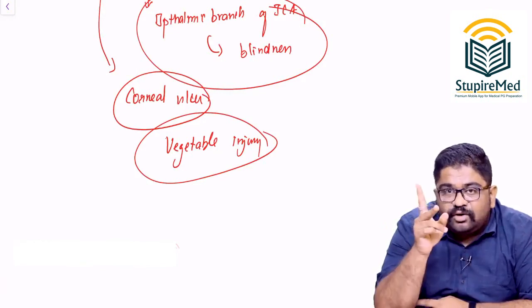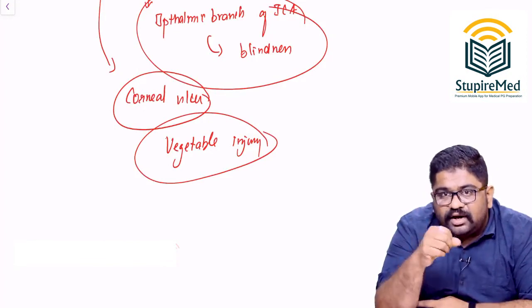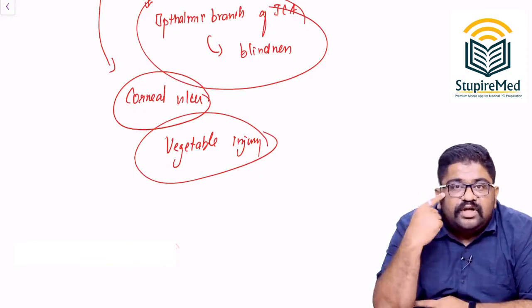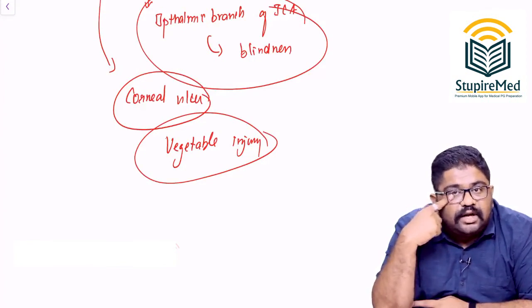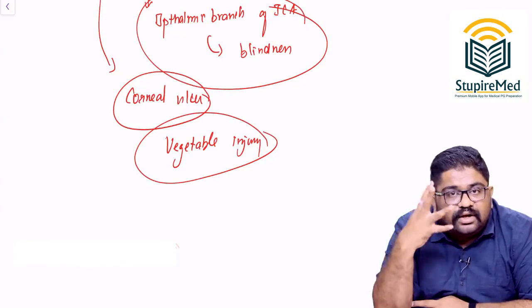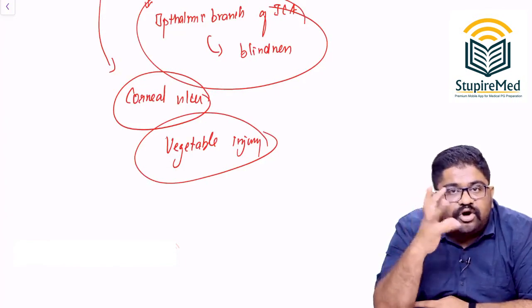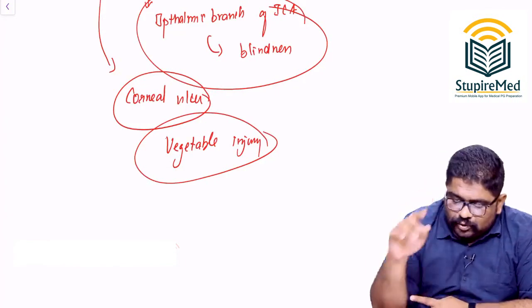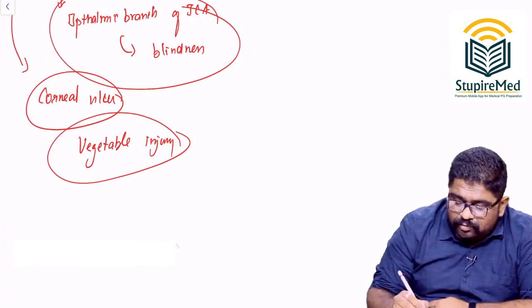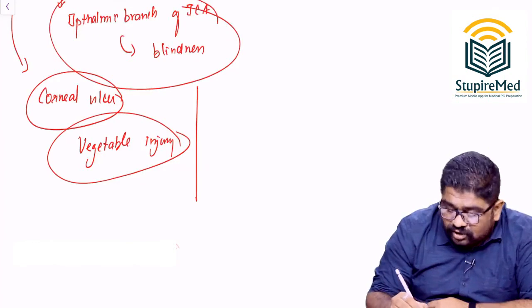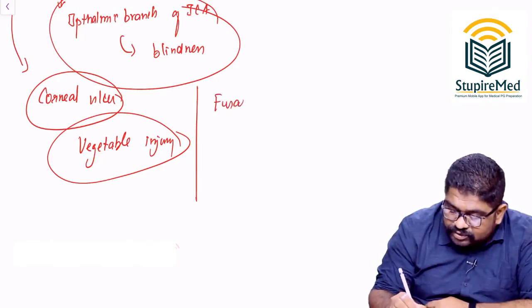But if at all I actually use that particular carrot and I get an injury, if the fungal site is actually trying to injure my cornea, the corneal injury can actually deposit the organism on the cornea. Then the organism can penetrate through the corneal layer to cause keratitis. You can think about Aspergillus causing vegetable injury based corneal ulcer. But on that basis, who is the most common fungus causing corneal ulcer, the answer is Fusarium.